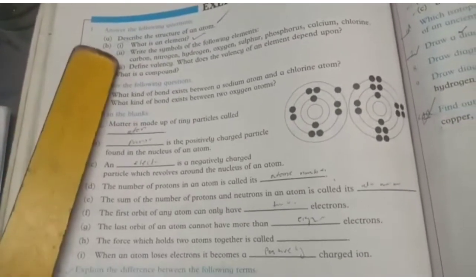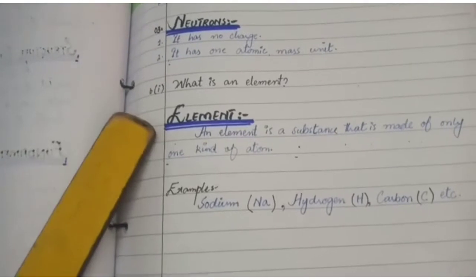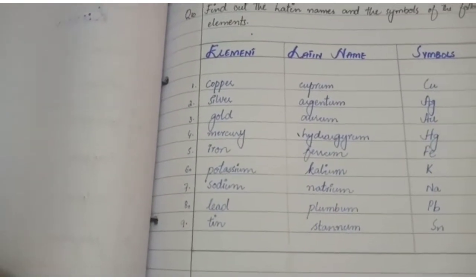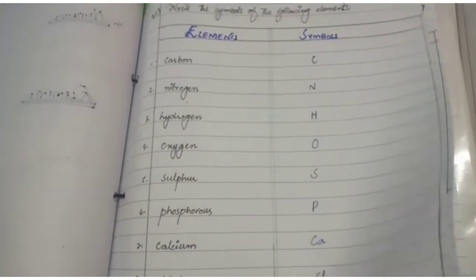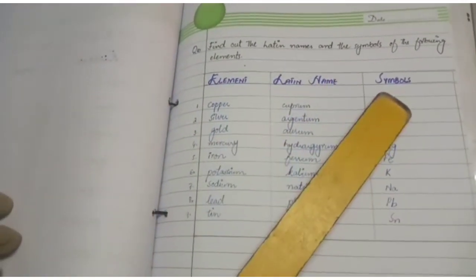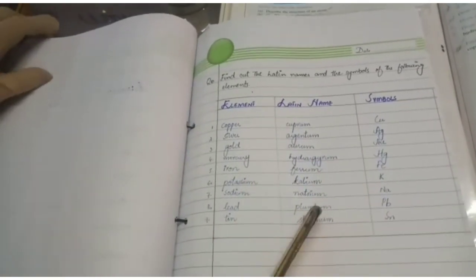Now for homework: question number one, part B — part one and part two — and question number ten from unit number seven. I hope today's lecture was well understood. Memorize the elements 10 at a time. Look at the book: question number one part B parts one and two — write the definitions and make a chart of elements and their symbols. Question number ten covers elements with their Latin names and symbols. See you in the next video. Love.